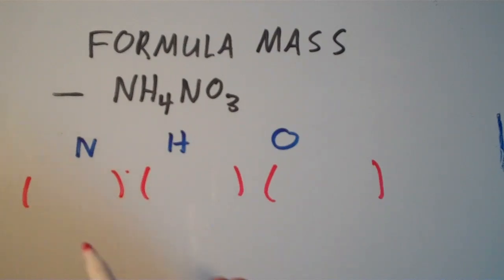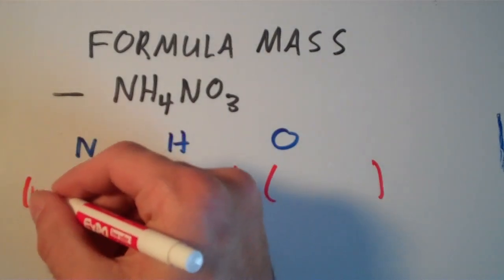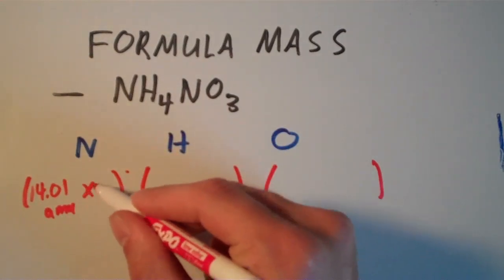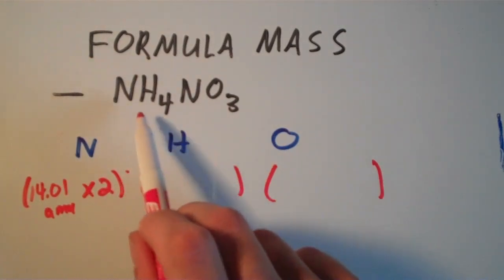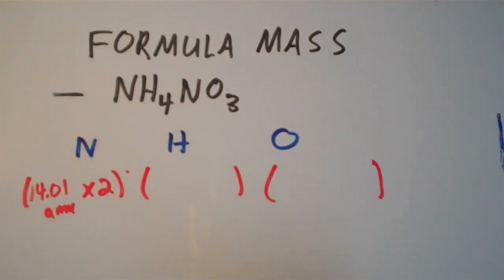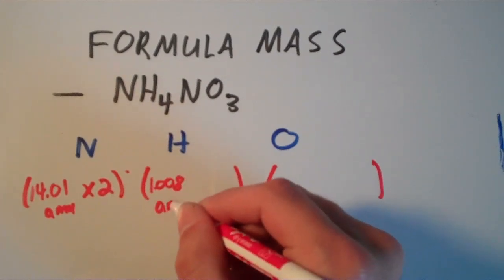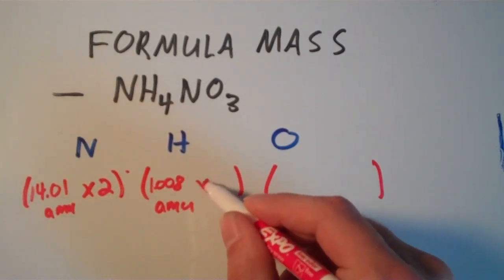So for nitrogen we have 14.01 AMU, and there are two of them. This is NH4NO3, so there are two nitrogens. And then for the hydrogen, the atomic mass of hydrogen is 1.008 AMU. And there are four of them.